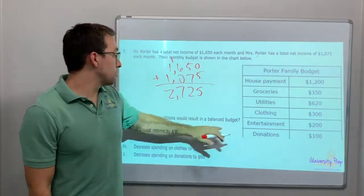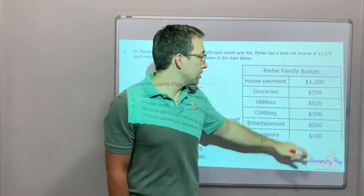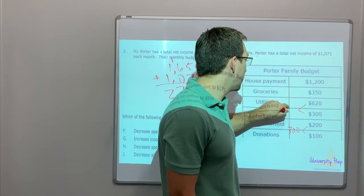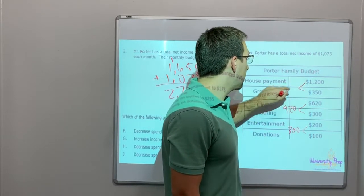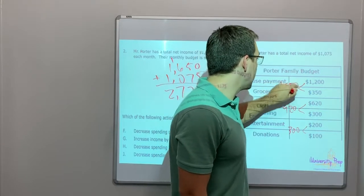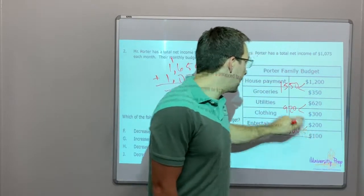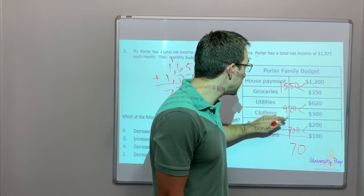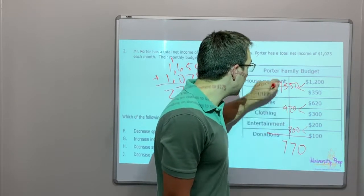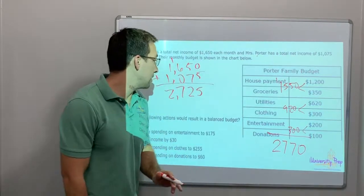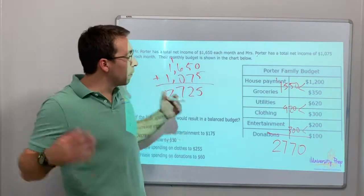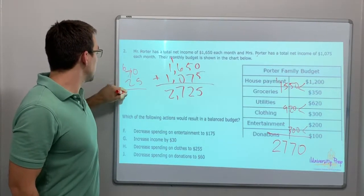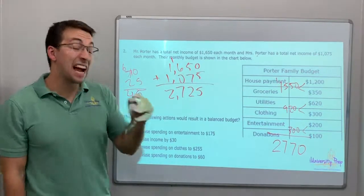Which of the following actions would result in a balanced budget? Let's add this together: $300, $920, and $1,550. Adding this up together, 5 plus 2 plus 0 is 7, 5 plus 9 plus 3... 8 plus 9 is 17, carry my 1. $2,770. Yikes. So we're not too far over. $2,770 minus $2,725... $45. We've got to find $45.